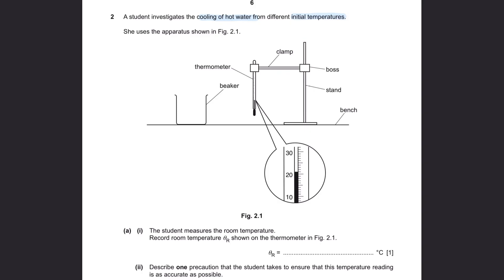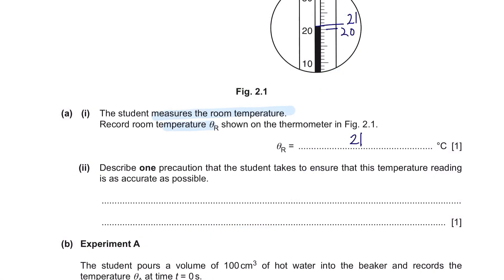As you can see here, we have got a thermometer, a beaker to hold your hot water, a clamp, and a retort stand holding your thermometer. Question A part 1, the student measures the room temperature. Record room temperature theta r shown in the thermometer. This is 20 and as we can see here, the reading is 21. Part 2, describe one precaution that the student takes to ensure that this temperature reading is as accurate as possible. As mentioned previously, when taking measurements on a scale, make sure to place your eyes perpendicular to the scale to avoid parallax error.